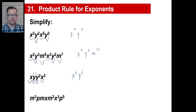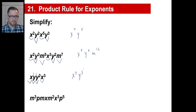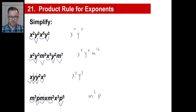Let's try one last one — pause and copy. Let's go to the m's first. There's an m to the 3rd times m to the 1st, which gives us m to the 4th, times m to the 2nd is m to the 6th. Then p to the 1st times p to the 5th is p to the 6th. And x to the 1st times x to the 3rd will be x to the 4th.